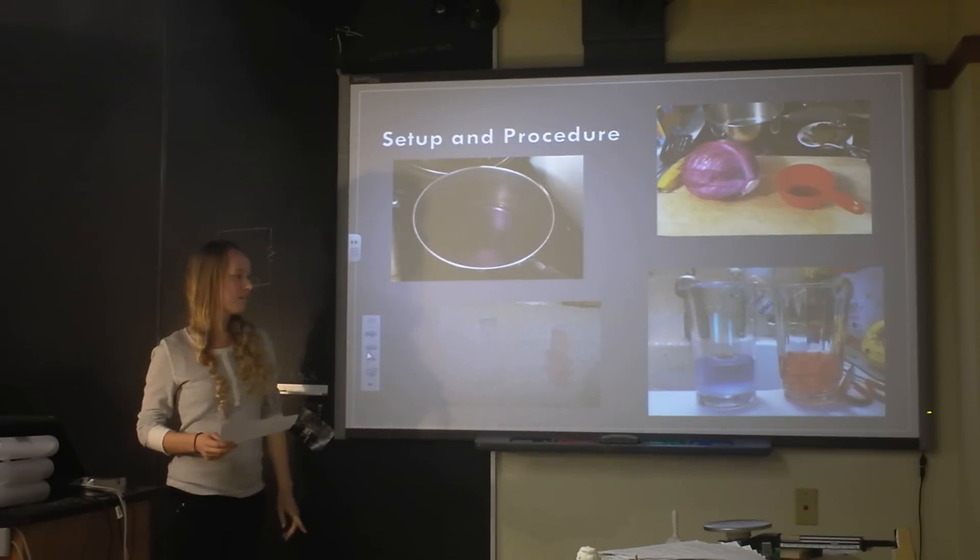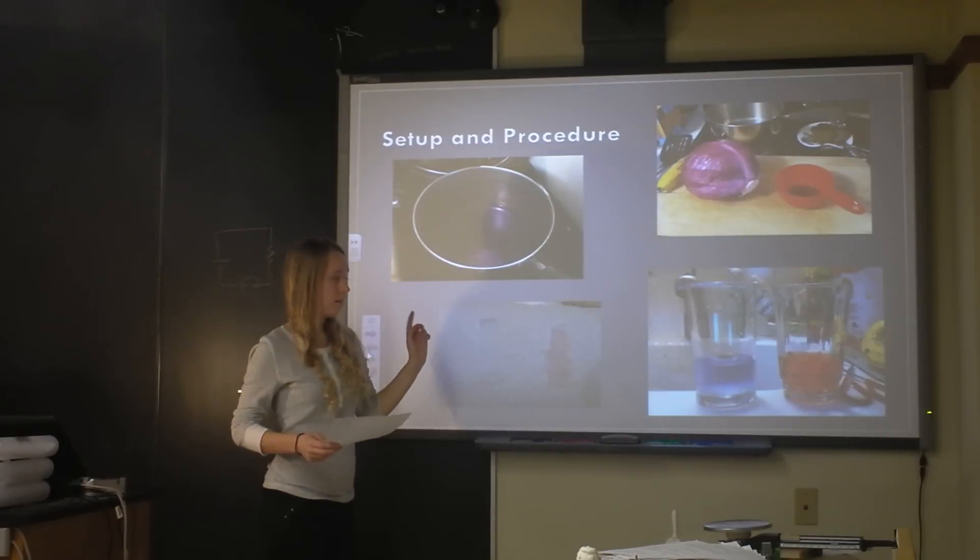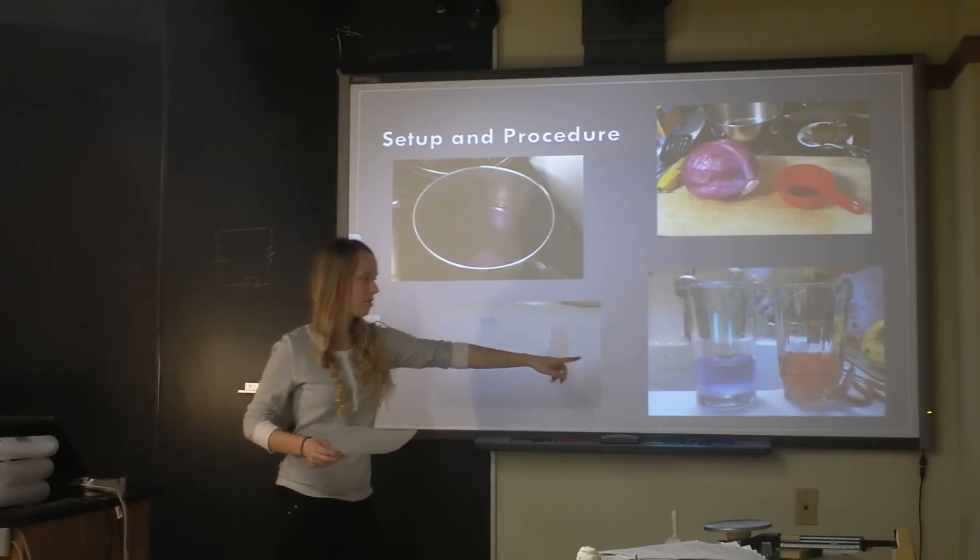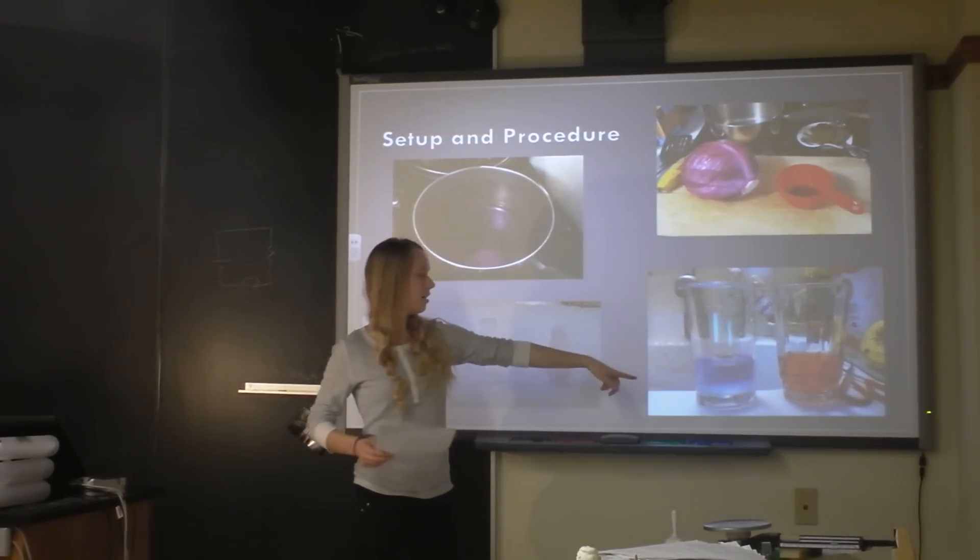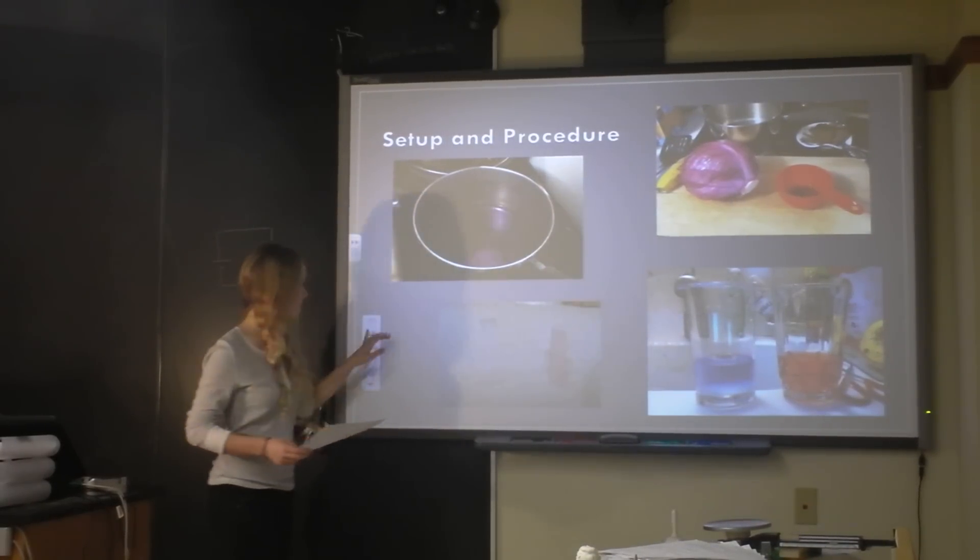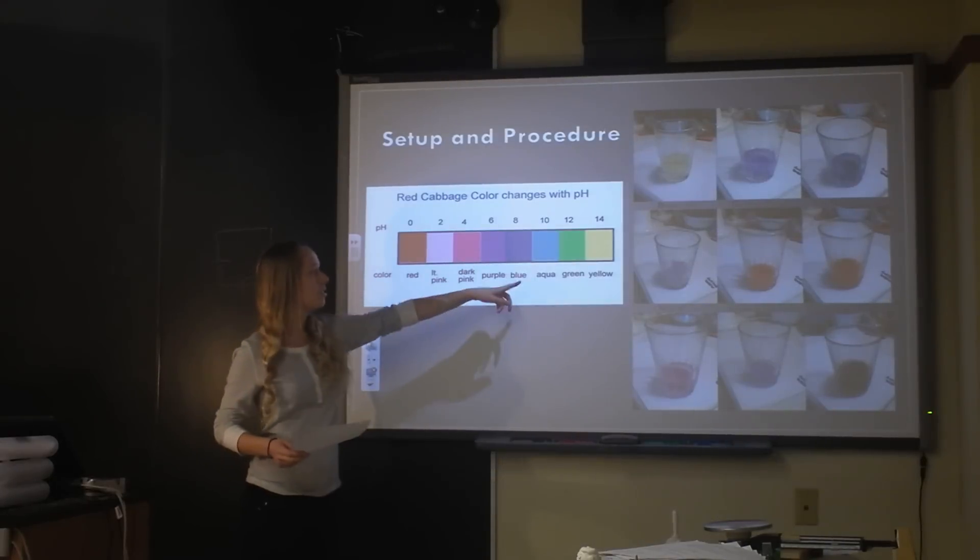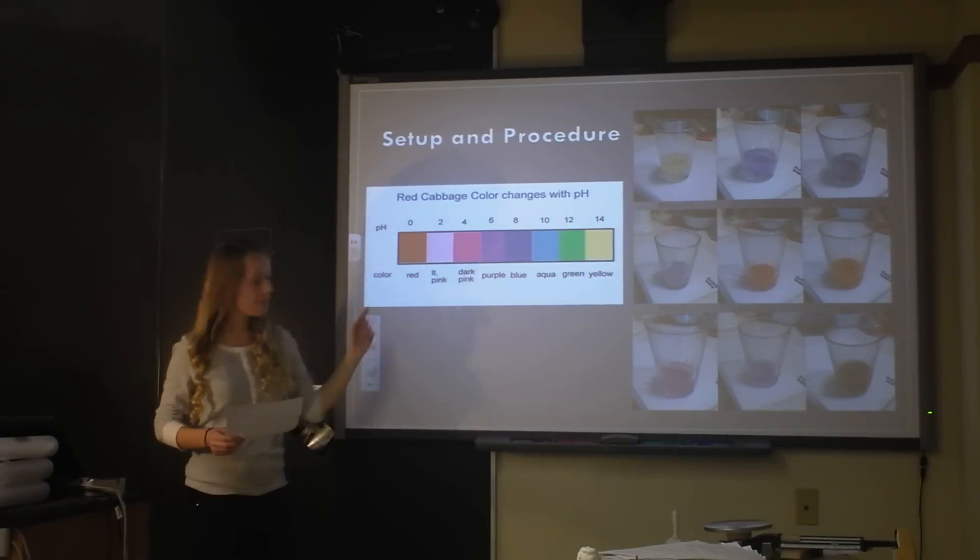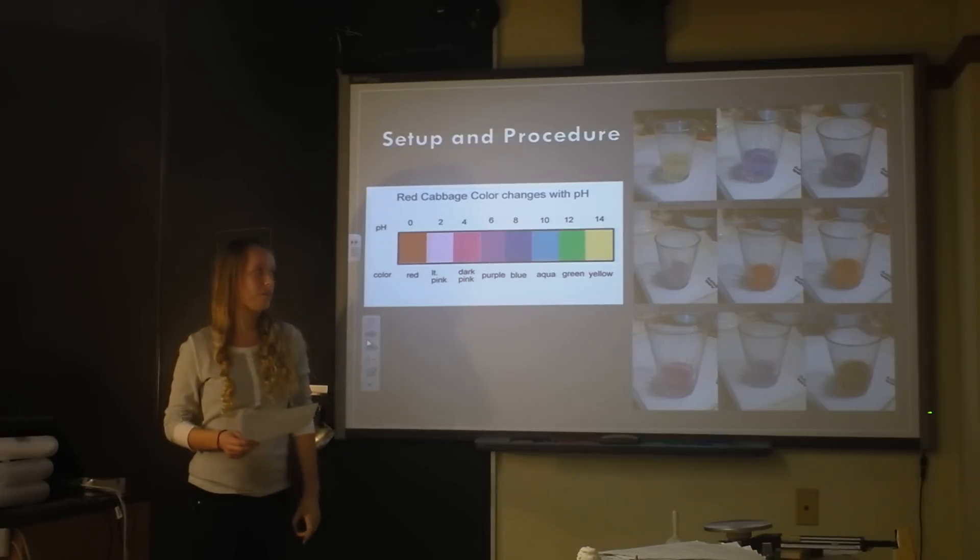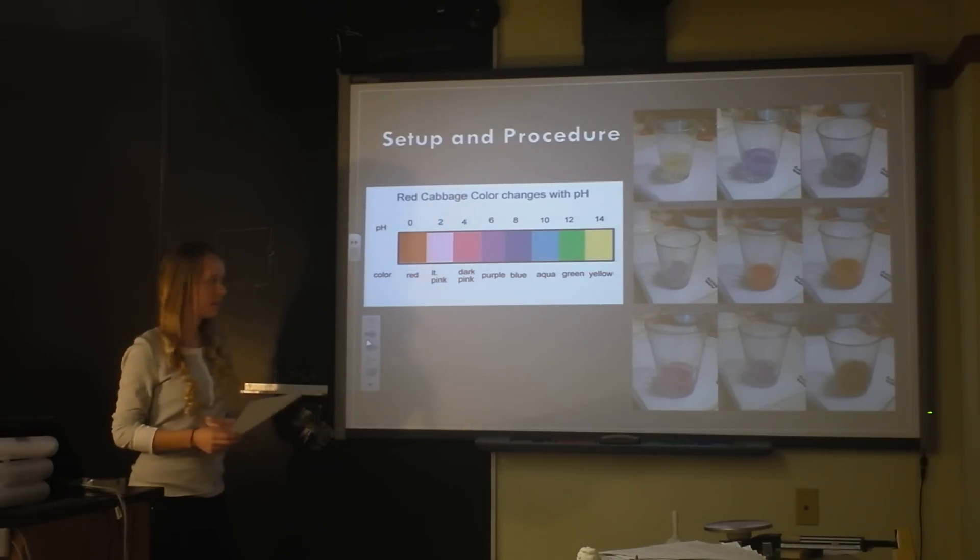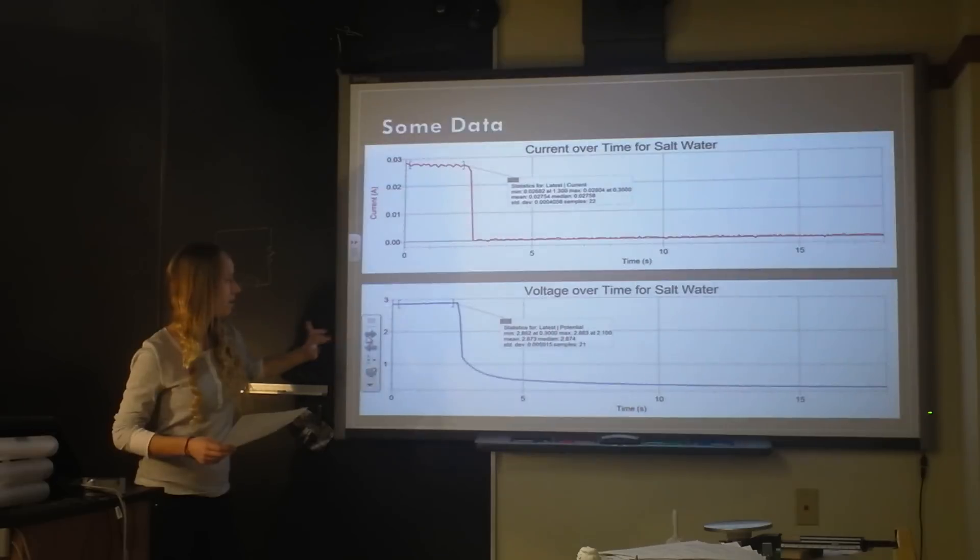And so that is baking soda solution, the blue one, and that's vinegar. And so the vinegar is really acidic, and the baking soda solution is really basic. So you can see the basic ones are more blue, and the acidic ones are more pink or red. And so this was actually kind of a high error way of testing the acidity because I had to interpret the color as a number. And so I was kind of worried about that not being very accurate.